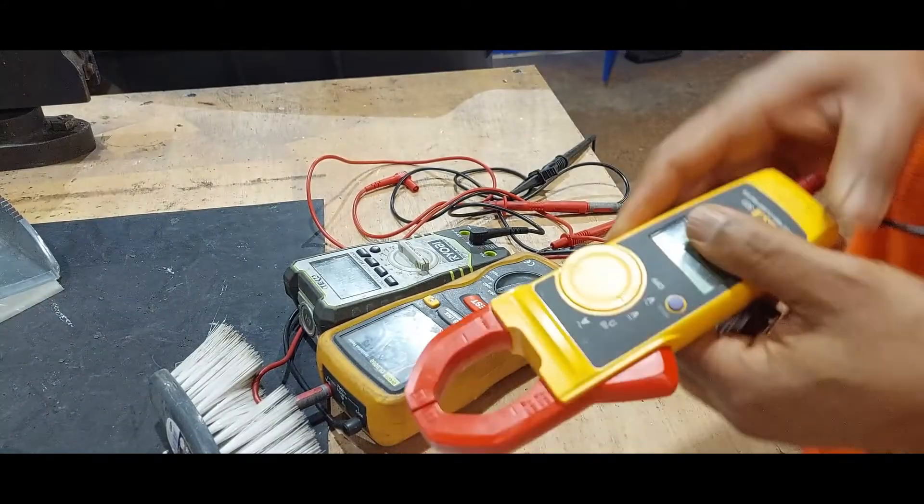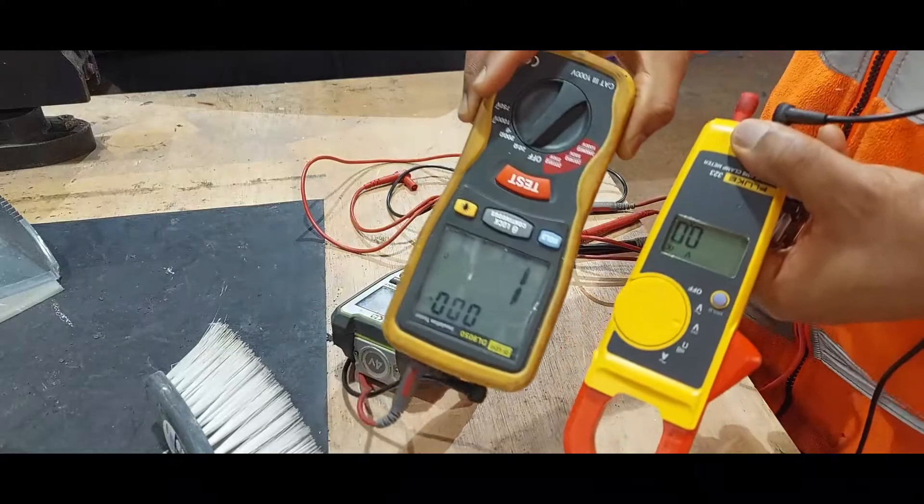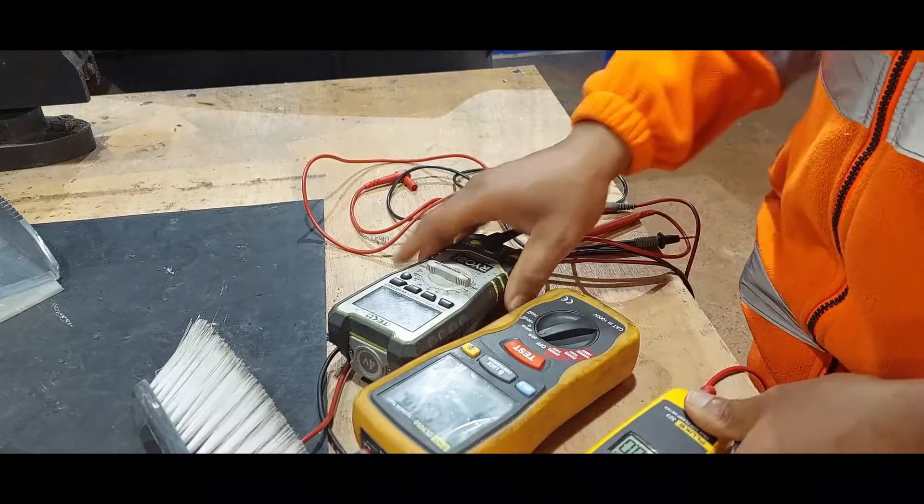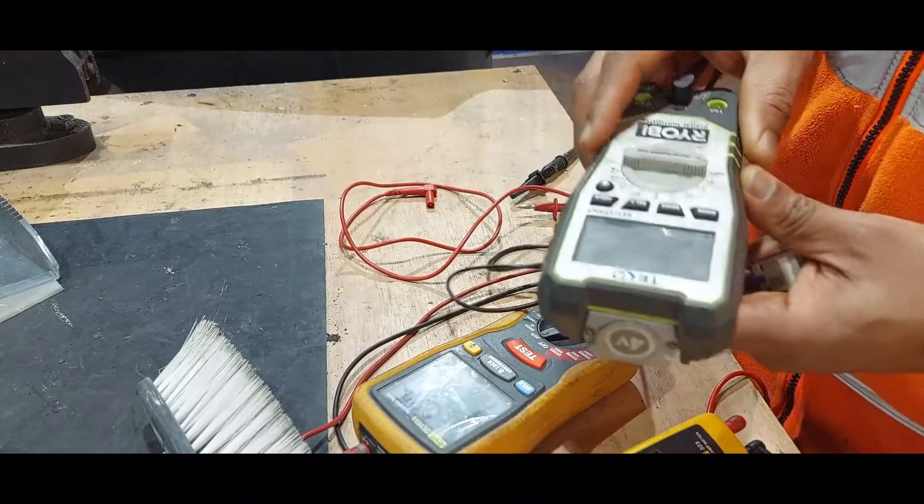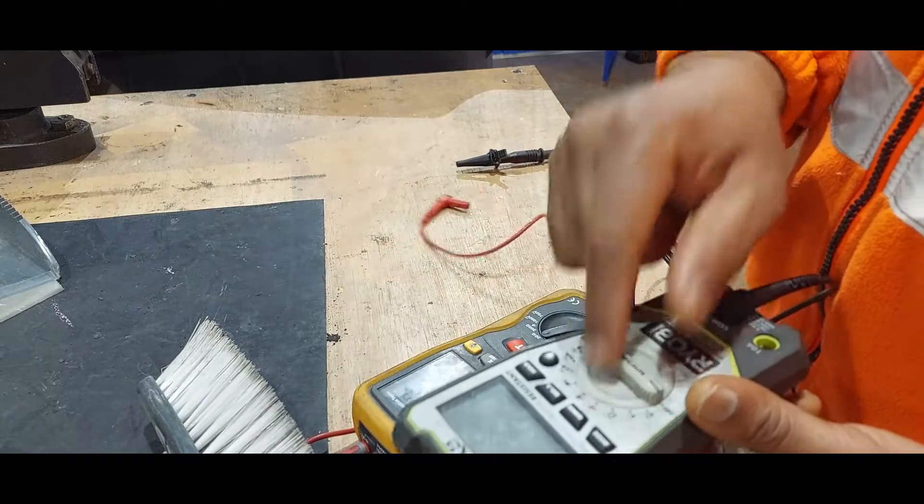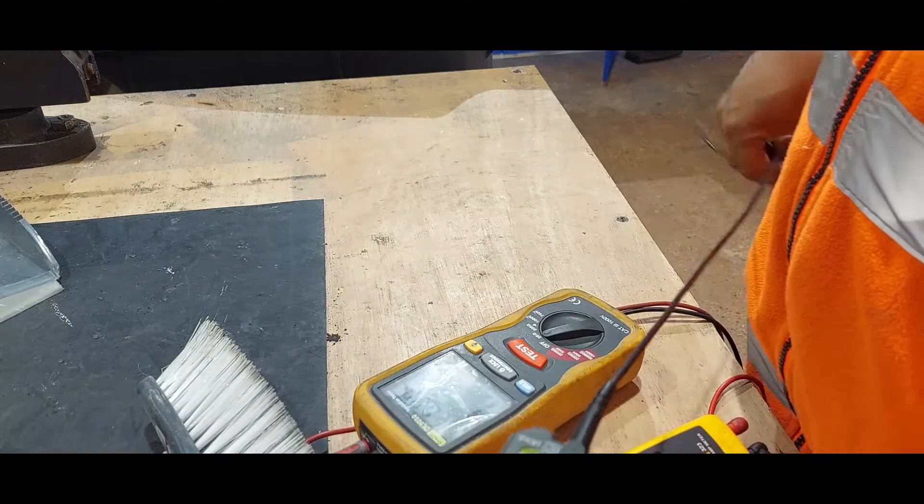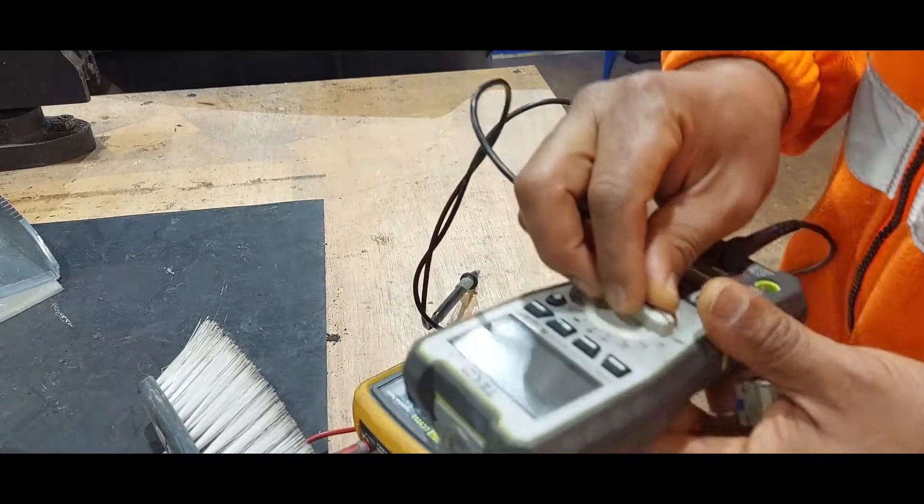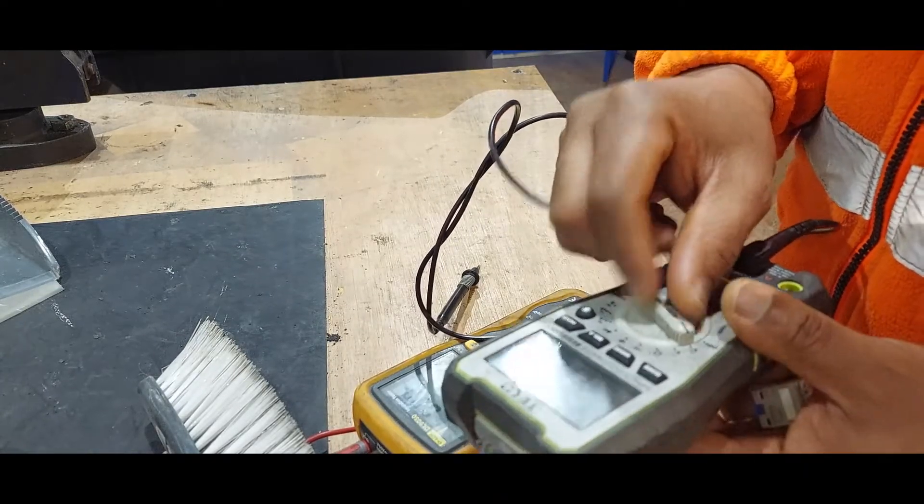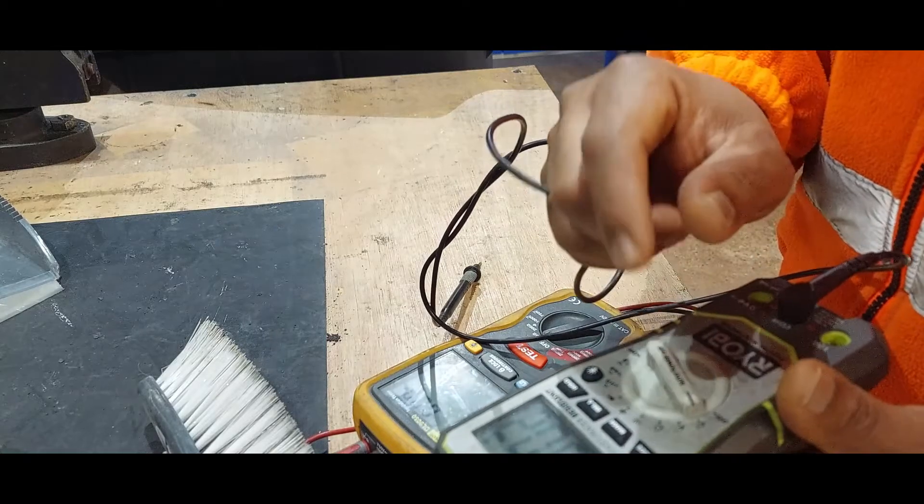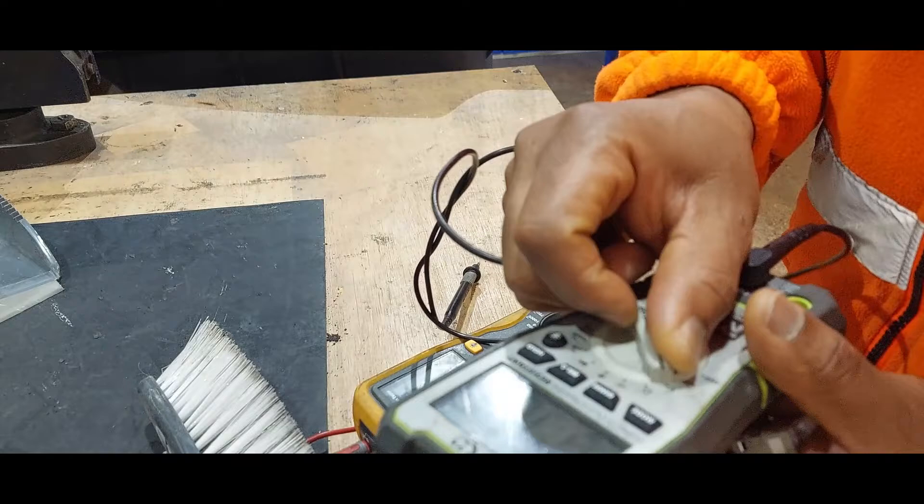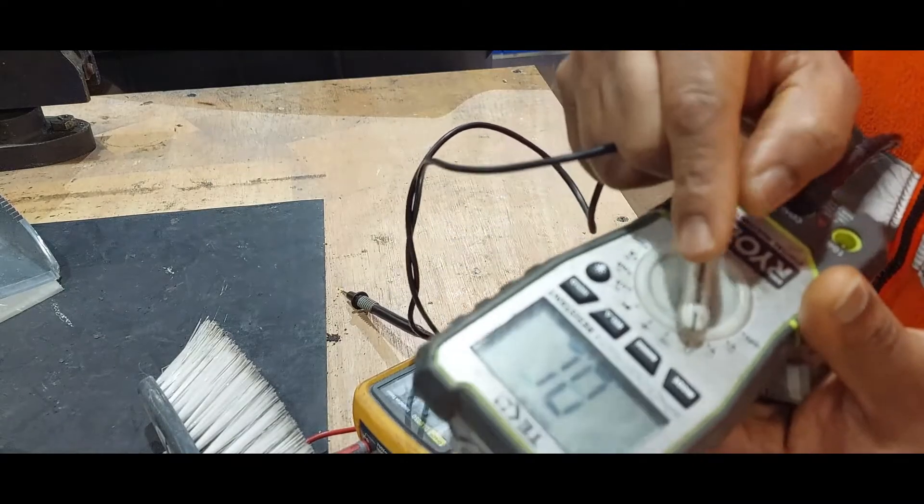But here I have three multimeters. Some of them are not working on low resistance. You know why it does not work? Because they are damaged. And you know what damages these multimeters? If you measure resistance while there's voltage, if your circuit is live, you should never measure resistance on a live circuit.